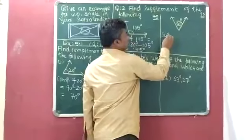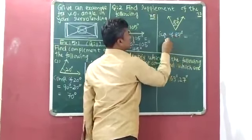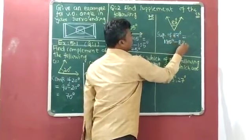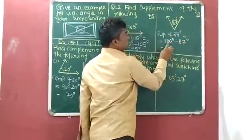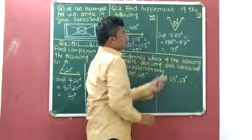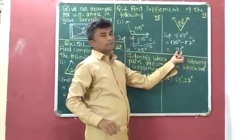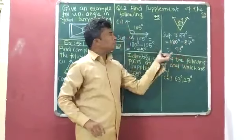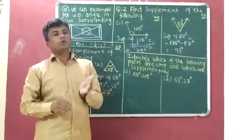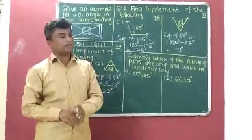Supplement of 87 degrees is equal to 180 degrees minus 87 degrees, and its answer is 93 degrees. So if you want to identify the supplement of any angle, you have to subtract the given angle from 180 degrees.